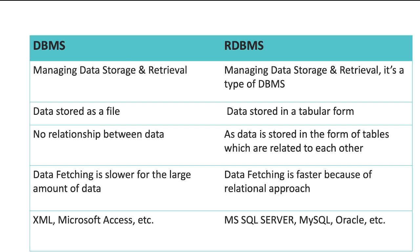In conclusion: DBMS manages a database with storage and retrieval. RDBMS is a type of DBMS that also manages data storage and retrieval. In DBMS, data is stored as a file; in RDBMS, data is stored in tabular form. In DBMS there is no relationship between data, whereas in RDBMS data is stored in the form of tables and each table links to another through a relationship.